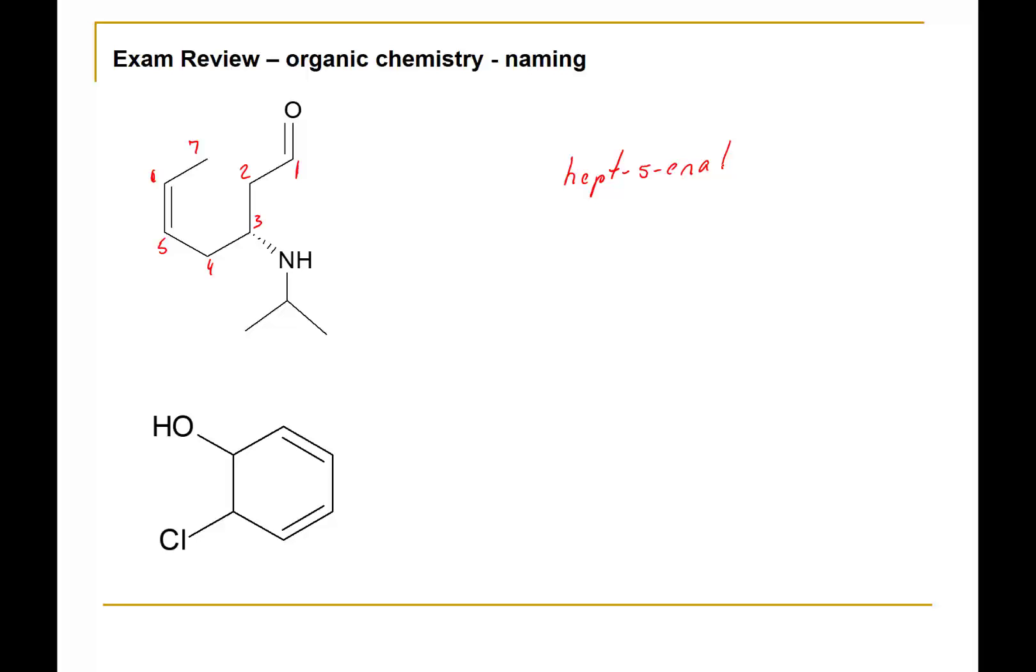Now we have one substituent here and that's the amino substituent, but it too has a substituent and that's the isopropyl group and we'll need to say that that isopropyl group is on the nitrogen. So we'll write something like 3-amino-N-isopropyl.